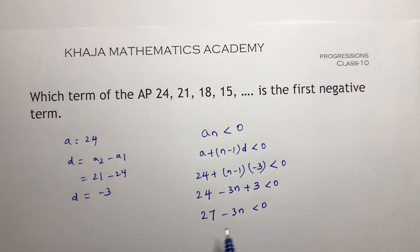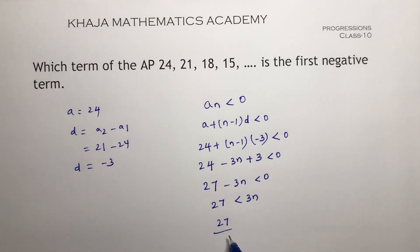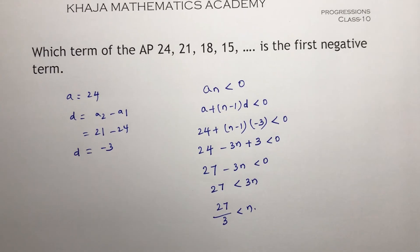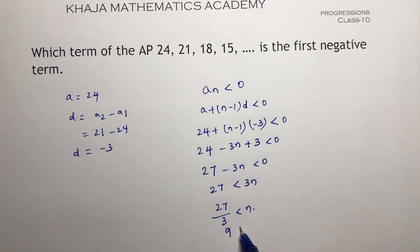So as it is in equation, make the variable positive then start solving. 27 less than 3n. So 27 by 3 is less than n. So 27 by 3 is 9. 9 is less than n.